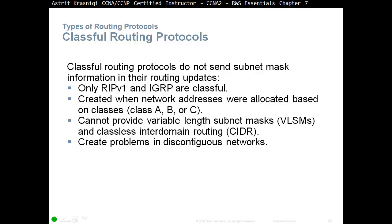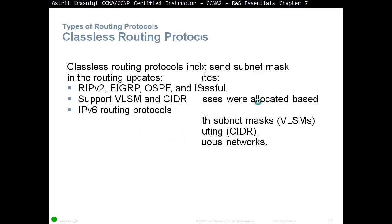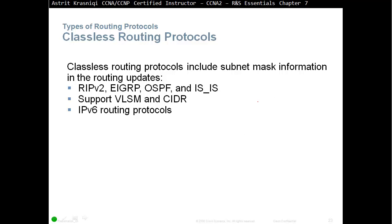Classful routing protocols do not send subnet mask information in their routing updates — no subnet mask. Only RIP version 1 and IGRP are classful. They were created when networks were allocated based on classes — Class A, B, or C. They cannot provide VLSM (variable length subnet mask) or CIDR, which creates problems in discontinuous networks. Classless routing protocols — RIP version 2, EIGRP, OSPF, and ISIS — do support VLSM and CIDR, and that is what we use today.